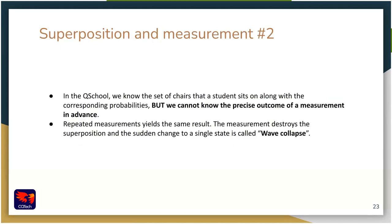Let's record those findings. In the quantum world, we can know the set of chairs the student is on with corresponding probabilities. However, we don't know the precise outcome of any single measurement in advance — unless there is 100% chance of finding them in one particular state. Also, repeated measurements yield the same result, meaning measurement destroys the superposition. This sudden change from superposition to a single state is called wave collapse.